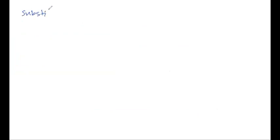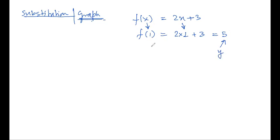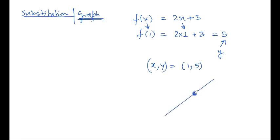In terms of graphs, f(x) equals 2x plus 3 means that f(1) equals 5, i.e., replacing x with 1 gives y equals 5. So the point (1, 5) lies on the graph of the function. In general, f(a) equals b means the point (a, b) is on the curve.